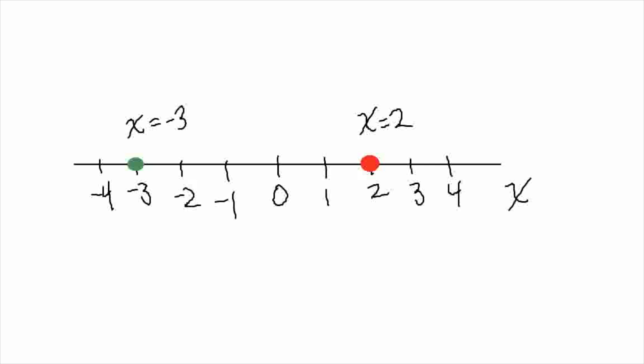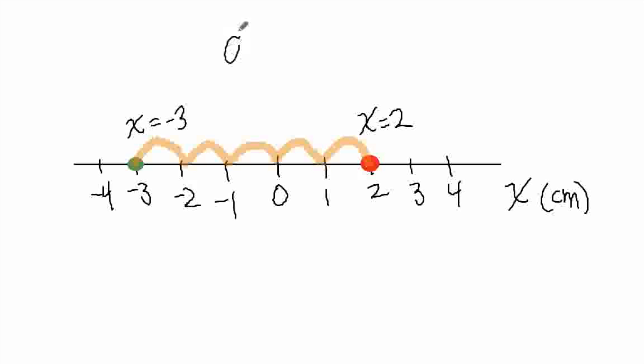Suppose something moved from the red dot to the green dot, and we wanted to know what was the distance that it traveled. Let's say that these numbers are separated by a single centimeter, so the distance between any two neighboring numbers is one centimeter. If some object — some ant — moves from the red dot to the green dot, that's one, two, three, four, five hops. Therefore, the distance that it traveled from one position to the other is five centimeters.